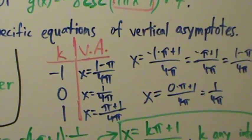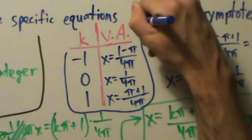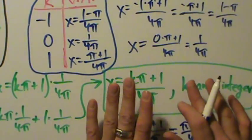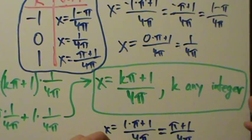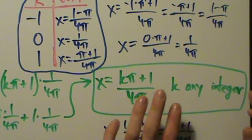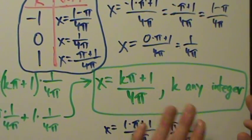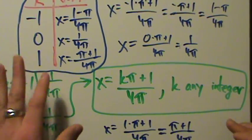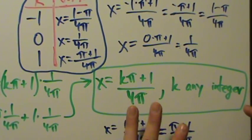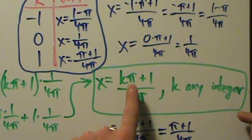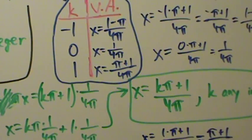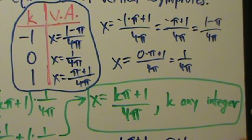So those are our three specific equations of vertical asymptotes. Just like in examples 1, 2, and 3: take the general equation, plug in specific integer values of k - remember k must be an integer, no fractions or decimals - and simplify. That's example 4 for finding vertical asymptotes for trig functions in general.